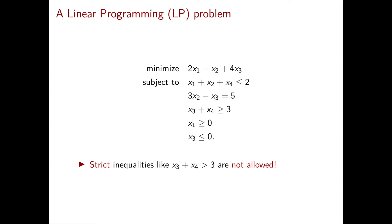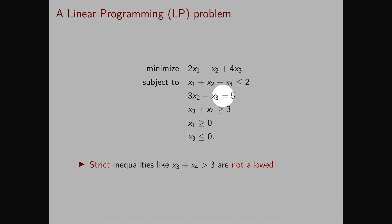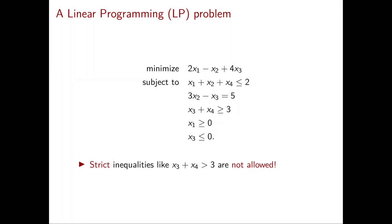Let's see our first example of a linear programming problem — I will always use LP to denote linear programming. In this LP, the objective function is 2x1 − x2 + 4x3, and we want to minimize it. The linear constraints are: x1 + x2 + x4 ≤ 2; 3x2 − x3 = 5; x3 + x4 ≥ 3; x1 ≥ 0; and x3 ≤ 0. All functions that appear are linear — we never multiply two variables together, so there's no x1*x2 or x1 squared. Also, all constraints are of the form ≤, =, or ≥; strict inequalities are never allowed in linear programming.